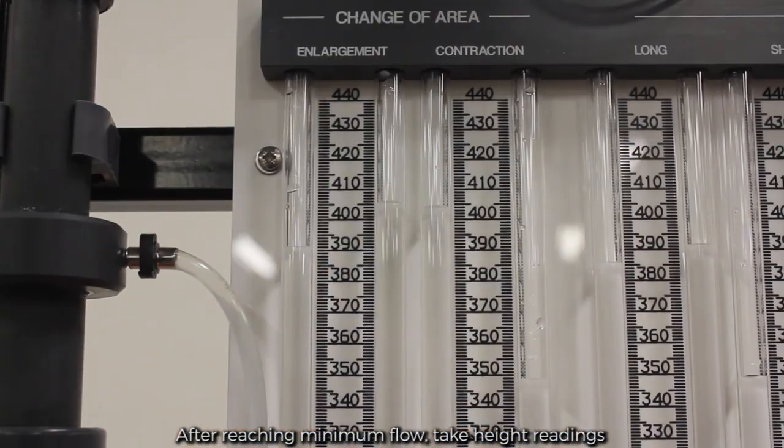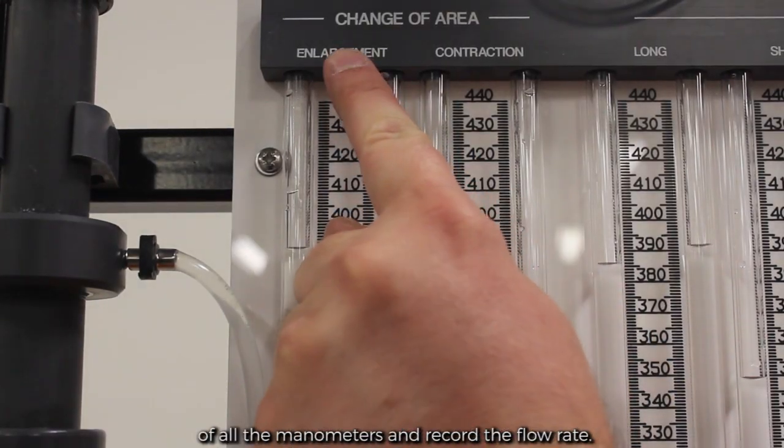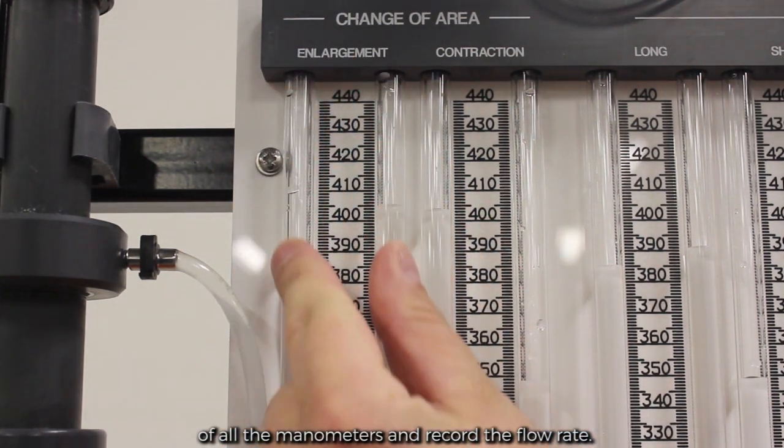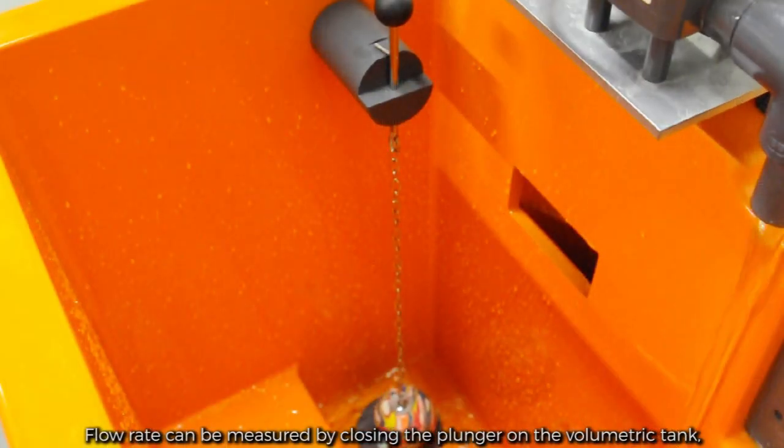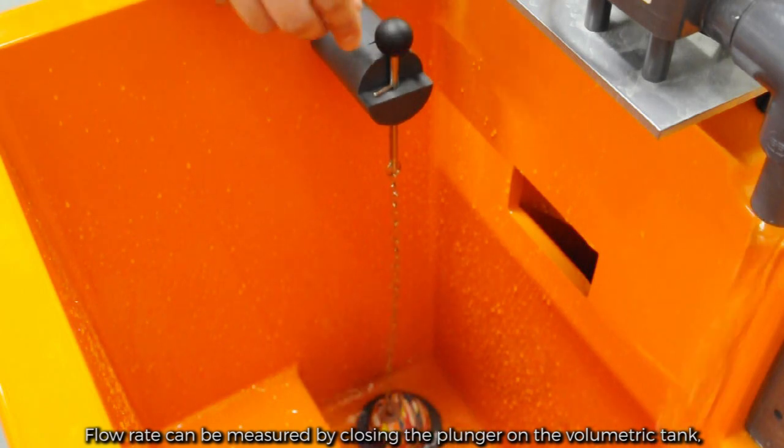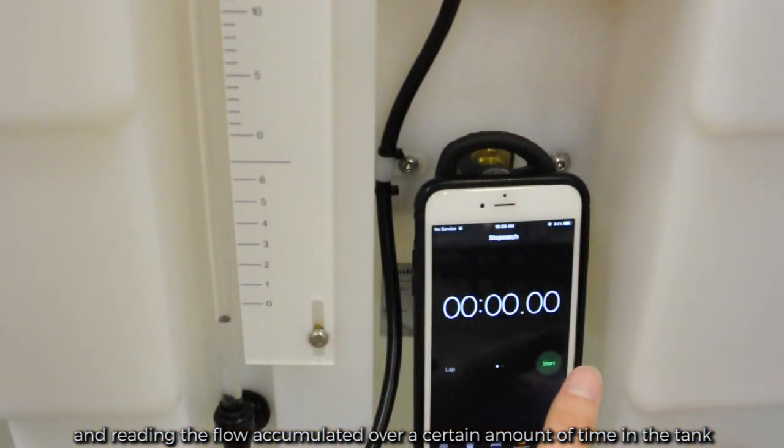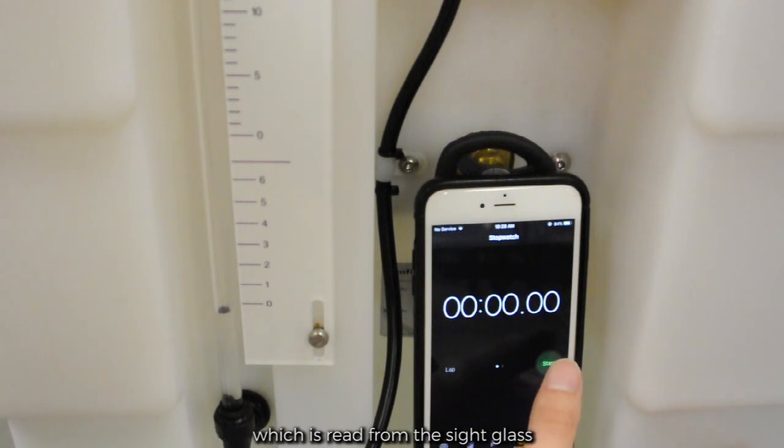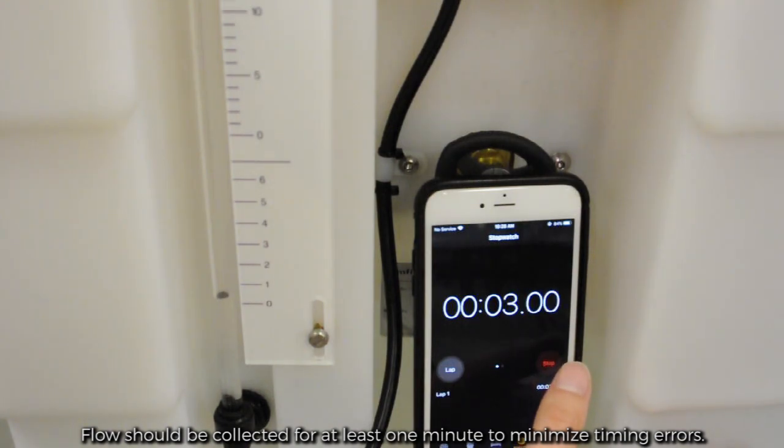After reaching minimum flow, take the height readings of all manometers and record the flow rate. Flow rate can be measured by closing the plunger on the volumetric tank and reading the flow accumulated over a certain amount of time in the tank, which is read from the sight glass. Flows should be collected for at least one minute to minimize timing errors.